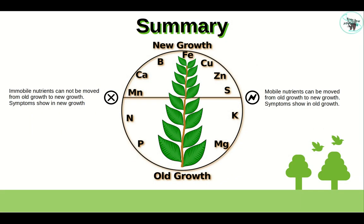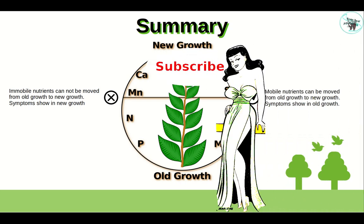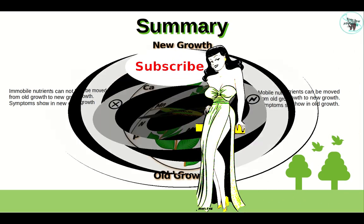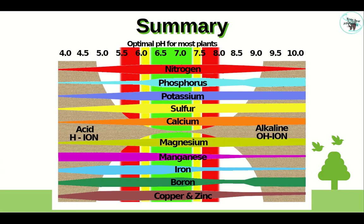To summarize: immobile nutrients cannot be moved from old growth to new growth, so symptoms will always show up in new growth first. Mobile nutrients can be moved from old growth to new growth, so symptoms show up in old growth first. Making sure your pH is in the correct range — approximately 6.2–7.4 — assures maximum availability for all nutrients. If you got something out of this video, like, share, and subscribe. Leave comments below and have a fantastic season.